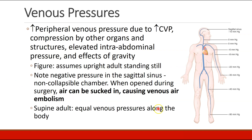Peripheral venous pressures increase when central venous pressure is elevated, or if there's compression by organs or structures, elevated intra-abdominal pressure, and most commonly, gravity. In an adult standing upright, venous pressures at the level of the heart are about zero; moving downward, they increase. Above the level of the heart, venous pressures become negative. The sagittal sinus, a non-collapsible chamber, can have negative pressures, and if opened during surgery, air could be sucked in due to the negative pressure, causing venous air embolus.